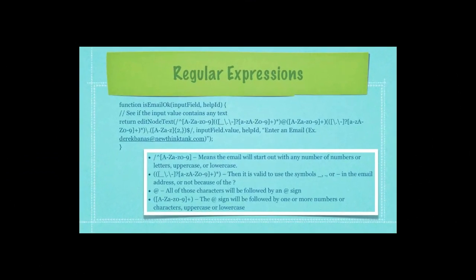Here we're checking to see if the email that was entered is okay. The first series of code means the email will start out with any number of numbers or letters, uppercase or lowercase. The next series of code states that it is valid to use the symbols that proceed there or a dash in the email address, or it is perfectly valid to not use any of those symbols.